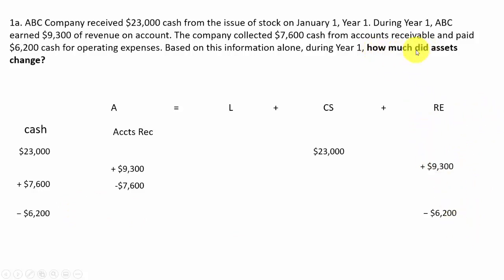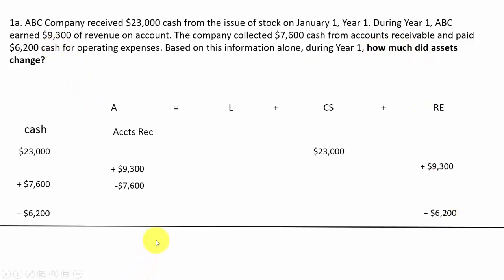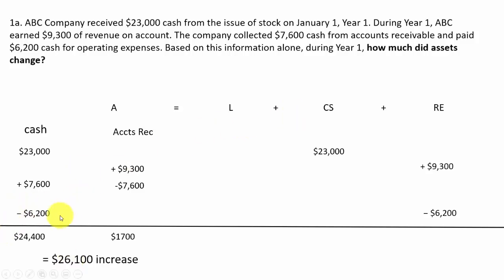We're supposed to figure out how much did assets change. Adding up all the cash transactions gives us plus $24,400, and all accounts receivable transactions add up to plus $1,700, so assets increased by $24,400 plus $1,700, or $26,100. To check, the other side has common stock of $23,000 and retained earnings with a net increase of $3,100 — those two together also equal $26,100. The answer is a $26,100 increase in assets.